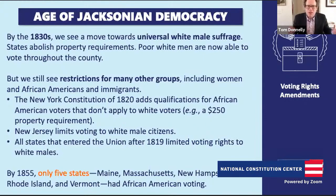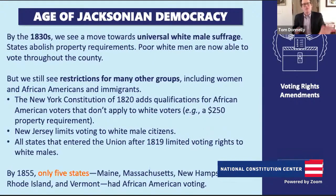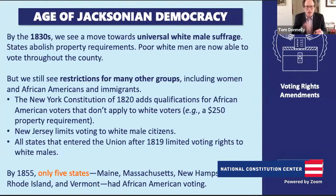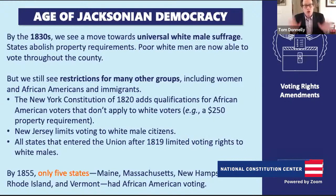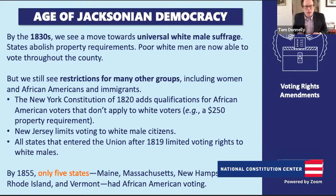On the flip side, we still see restrictions for various groups—women and African Americans. By 1855, on the eve of the Civil War, only five states permitted African Americans to vote: Maine, Massachusetts, New Hampshire, Rhode Island—states concentrated in New England. It's important to note that's not zero; there are some states permitting free African Americans to vote, but it's a small number concentrated in New England.